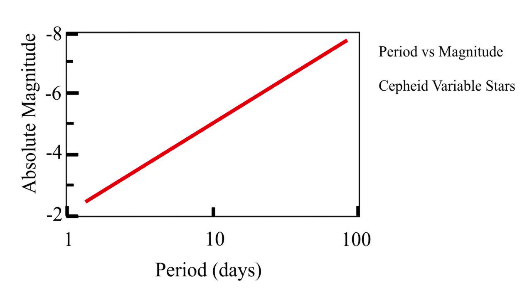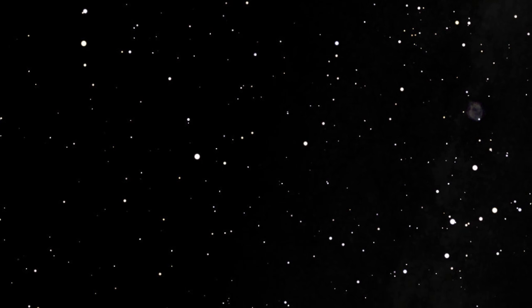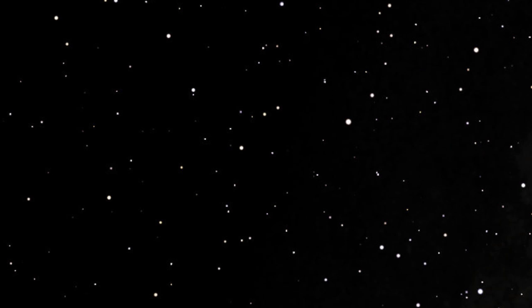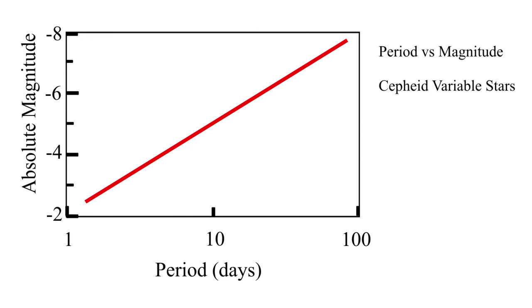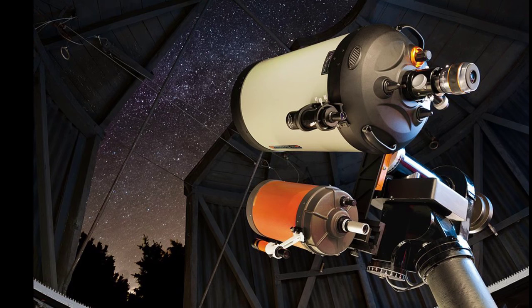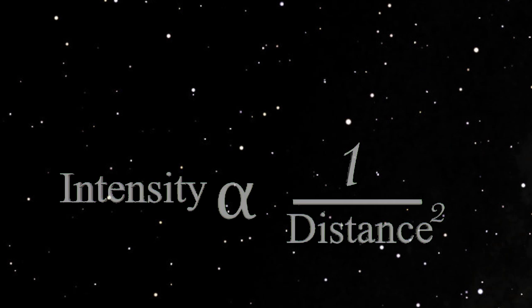The significance is this: If you observe a Cepheid variable at a very great distance, that is, too distant to be measured by any geometry, you now have another approach. Observe the star and determine its period. Then from Leavitt's chart, you can determine the actual magnitude or brightness of this star. Knowing this, it is possible to measure the light energy arriving at your telescope and use the physics of radiant energy to determine the distance to that star.